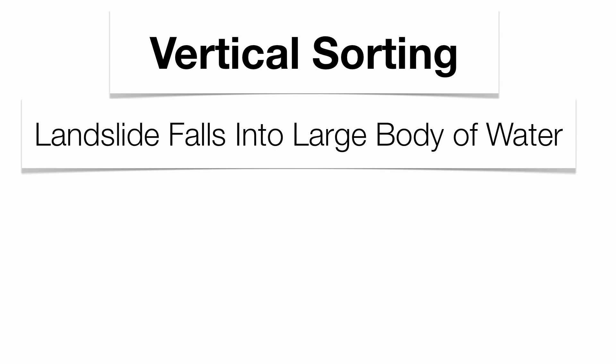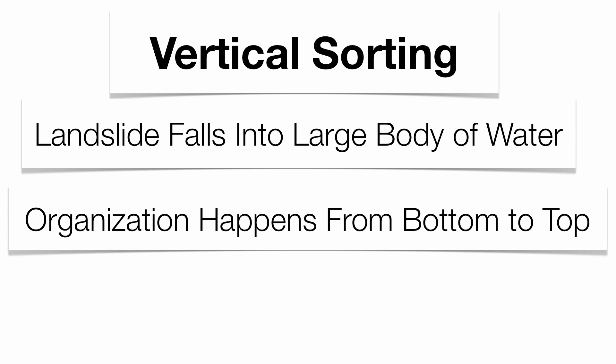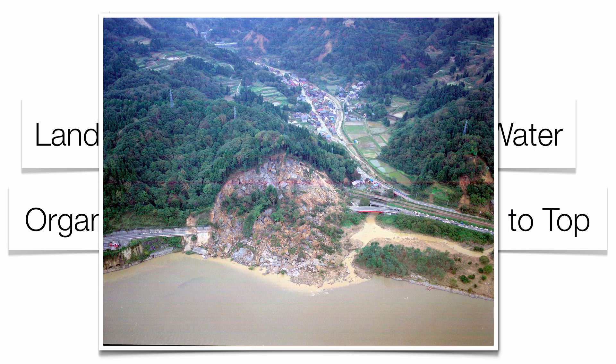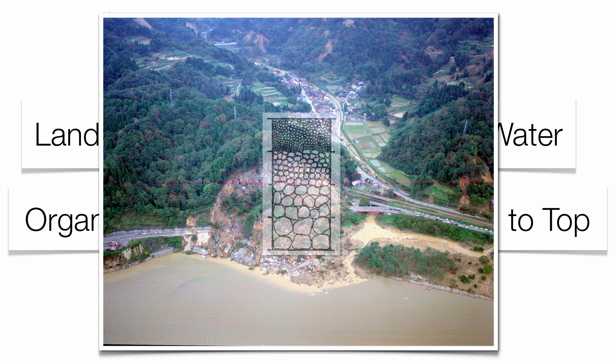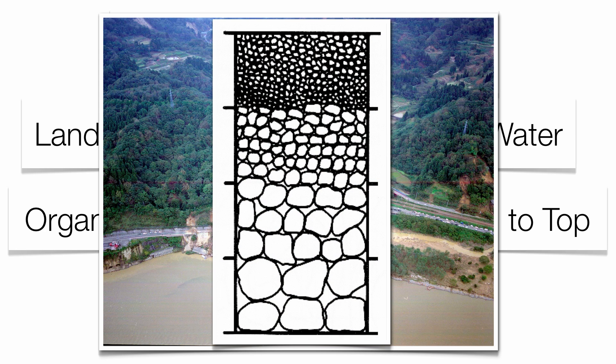You can also get sediments organized vertically. This is what happens when a landslide occurs next to a large body of water. Once that landslide falls into the water, your sediments are going to organize themselves from bottom to top — so the organization is in a vertical manner compared to a horizontal manner.